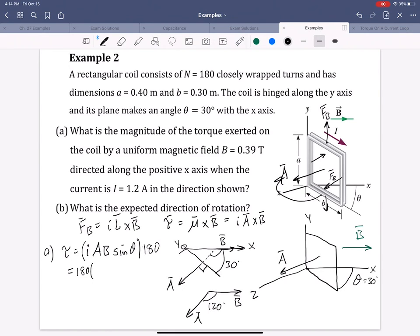We have 180 times our current value of 1.2 times our area, A times B. We have 0.4 times 0.3, and the magnetic field magnitude of 0.39 Tesla, sine 120. And after all that, we should get 8.75 newton meters. And remember, that's newton meters for torque, not a joule. Torque is not measured in joules. That's just for energy. The direction we've already specified was kind of clockwise around the y-axis. So clockwise about positive y.